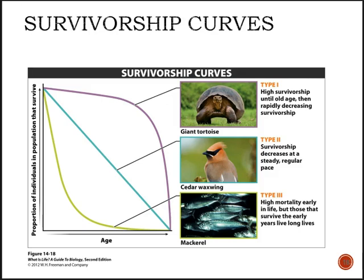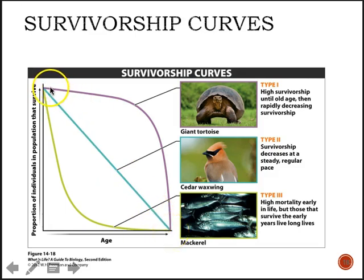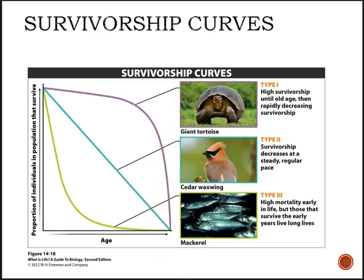So — type one like turtles, type two like birds with a regular pace of death throughout life, and type three like fish where everything eats them young but survival improves with size. What are humans? Many students think we're type two, but that's incorrect. Humans are type one: most babies survive, most teenagers survive, most adults survive, with a slow decline over time — and then once old age is reached, mortality rises sharply. Humans have a long life expectancy.